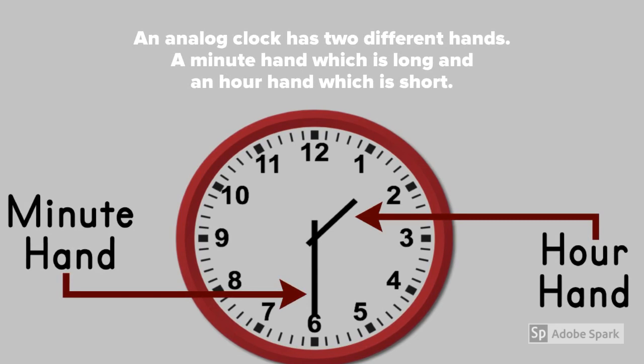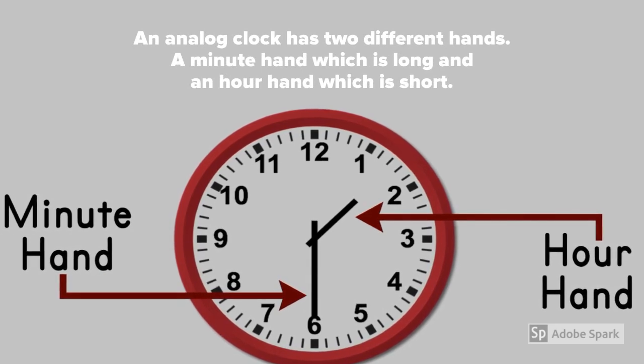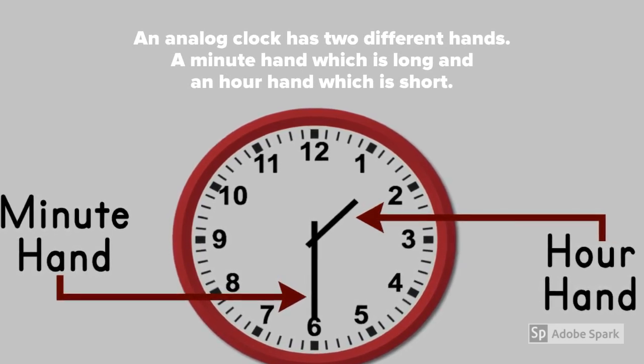An analog clock has two different hands: a minute hand which is long, and an hour hand which is short.